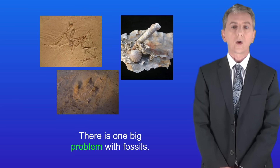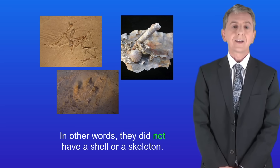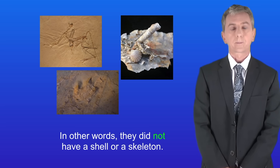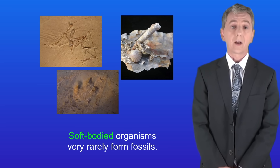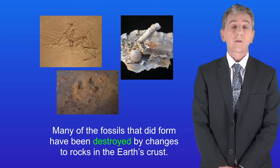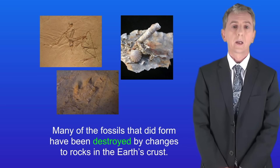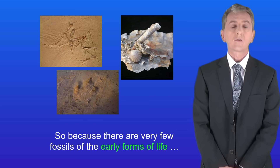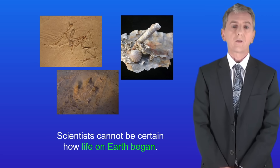Now there's one big problem with fossils. Many of the earliest forms of life were soft-bodied organisms — in other words they didn't have a shell or a skeleton. Soft-bodied organisms very rarely form fossils, and many of the fossils that did form have been destroyed by changes to rocks in the earth's crust. So because there are very few fossils of the early forms of life, scientists cannot be certain how life on earth began.